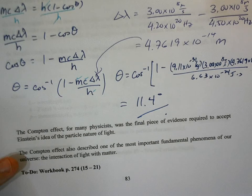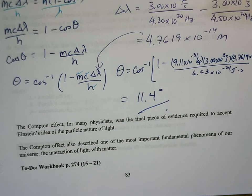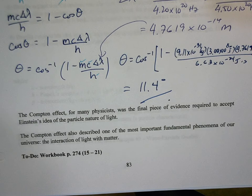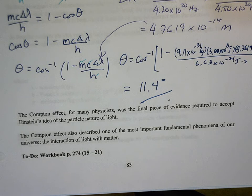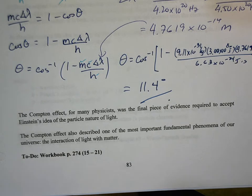The Compton Effect was that last piece of evidence for people to finally accept that the particle model actually does have validity. It also describes one of those fundamental phenomena of our universe — the interaction of light or electromagnetic radiation with matter. So the Compton Effect is very important, and we're going to do a little bit more with it later. This isn't the end of the story.